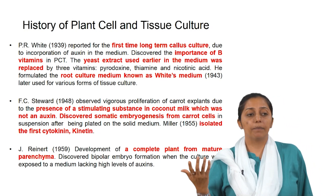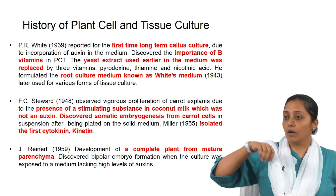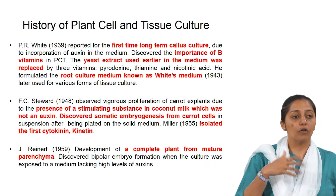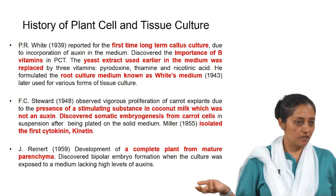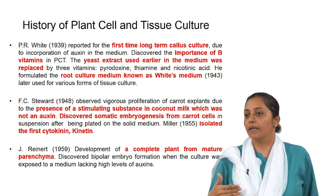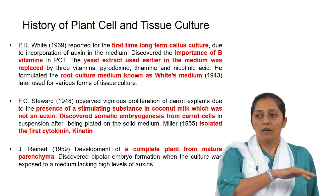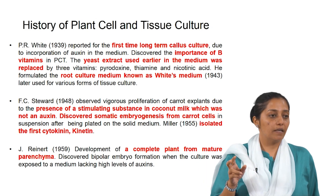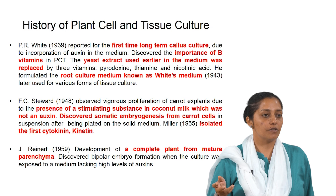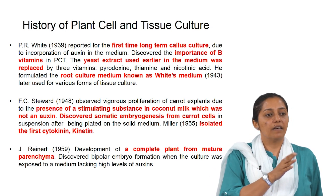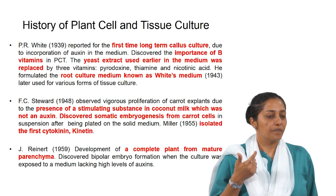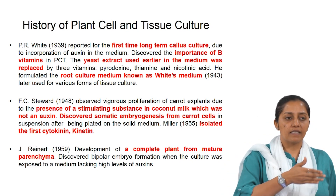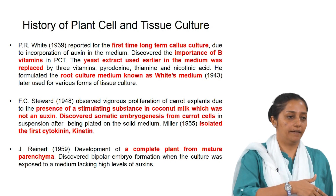Initially, because people did not know which nutrient was most significant, they used complex media — including yeast extract, which is even used now. Later, with more refinement, yeast extract was replaced when it was found that B vitamins are very significant in induction of in vitro plant cell and tissue cultures. The yeast extract was then replaced by three vitamins: pyridoxine, thiamine, and nicotinic acid. Gradually, all this led to better, more refined, and well-defined media compositions.